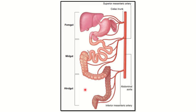The hindgut gives rise to the left one-third of the transverse colon, the splenic flexure, descending colon, sigmoid colon, rectum, and the upper part of the anal canal. In a quick review: from the foregut — esophagus, stomach, and duodenum, pancreas, liver, and gallbladder.